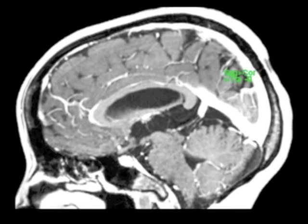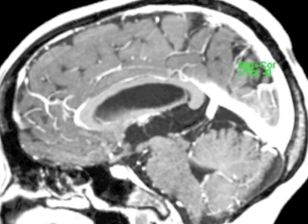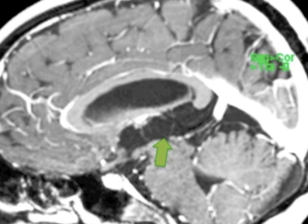On the sagittal view, a cyst formation was noticed in the third ventricle, particularly closing the entry area of the aqueduct.